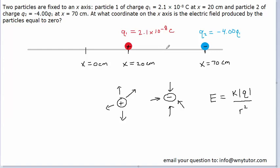Now consider a point located between the two charges. The electric field produced by the positive charge would be pointing away from it — that means pointing to the right. The electric field produced by the negative charge would be pointing towards the negative charge, and that also would be pointing to the right. We can clearly see that these two vectors, because they point in the same direction, are not going to cancel out. Therefore the net electric field cannot equal zero at this point, or for that matter any point between the two charges. So all of this region between the charges is ruled out.